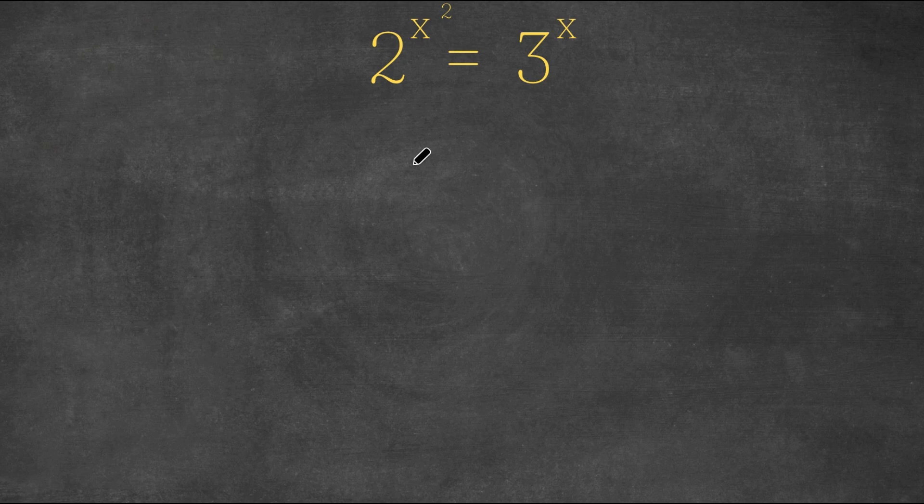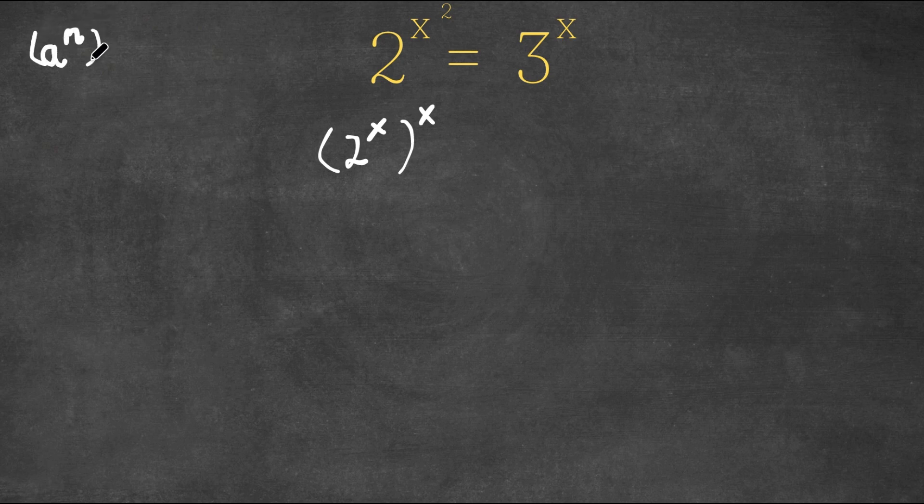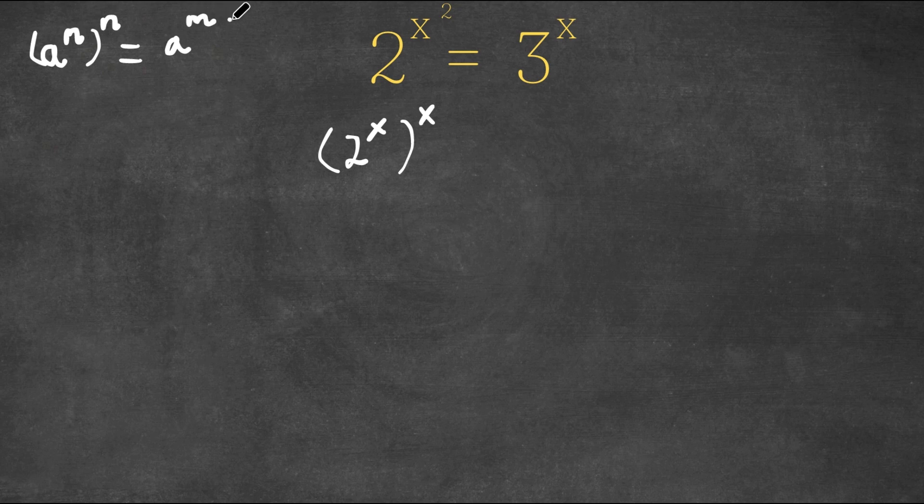And what I'm first going to do is I'm going to rewrite 2 to the power of x squared as 2 to the power of x to the power of x. So if you didn't already know, if we have something in the form a to the power of m to the power of n, this is equal to a to the power of m times n. So as you can see here, 2 to the power of x to the power of x would equal 2 to the power of x squared because x times x is x squared.